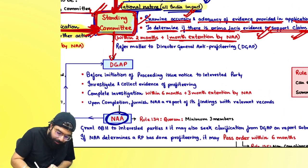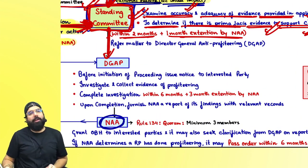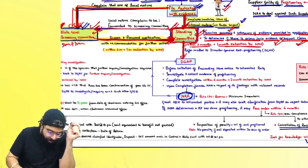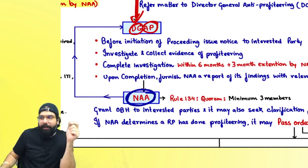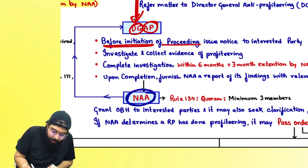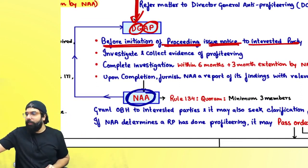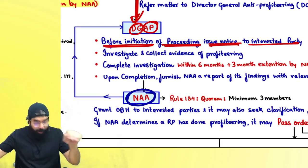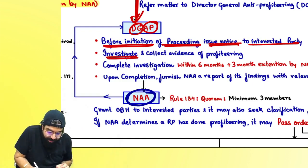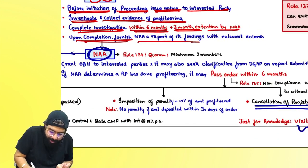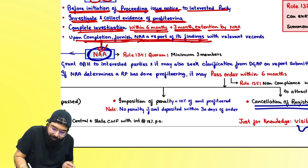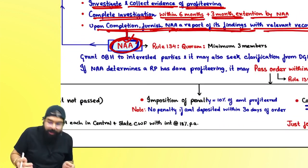The standing committee will check and send the case to the Director General of Anti-Profiteering (DGAP). The DGAP, before initiation of proceedings, will issue a notice to the interested party — calling both the dosa seller and the dosa eater. He will investigate and collect evidence of the profiteering, and complete the investigation within six months plus three months extension. Upon completion, they will send a report of findings with relevant records to the National Anti-Profiteering Authority.